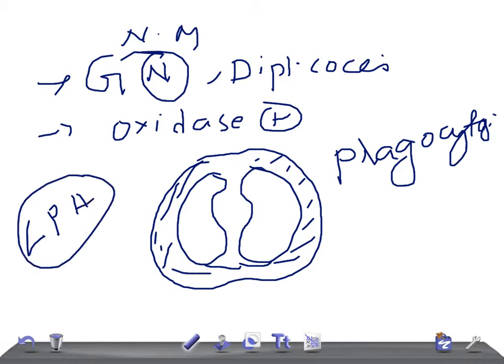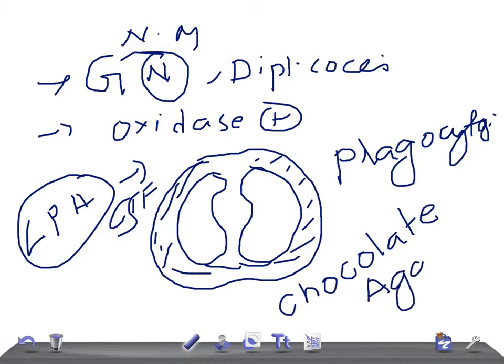They have latex particle agglutination, LPA. This can be done on CSF as it causes Neisseria meningitidis. The media we use to grow this is chocolate agar in a 5% carbon dioxide atmosphere.